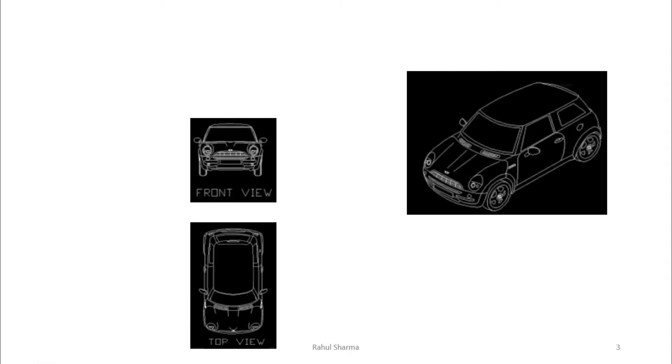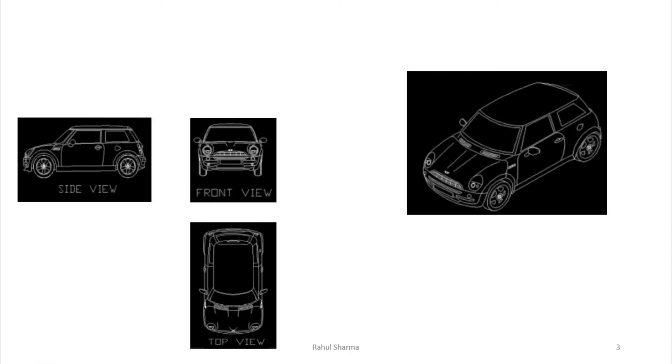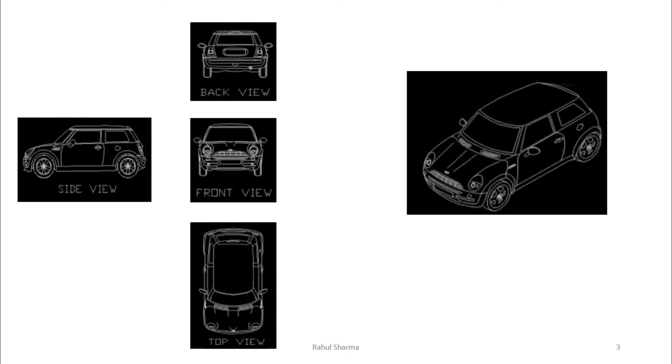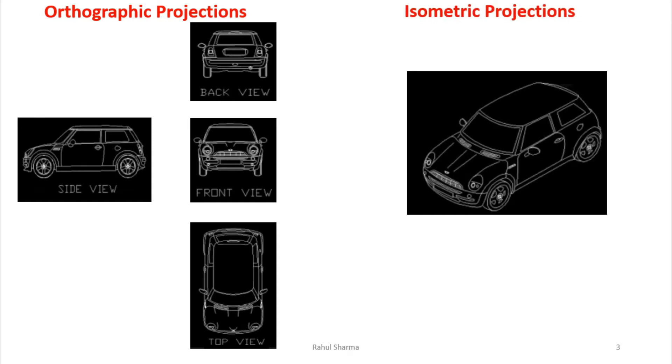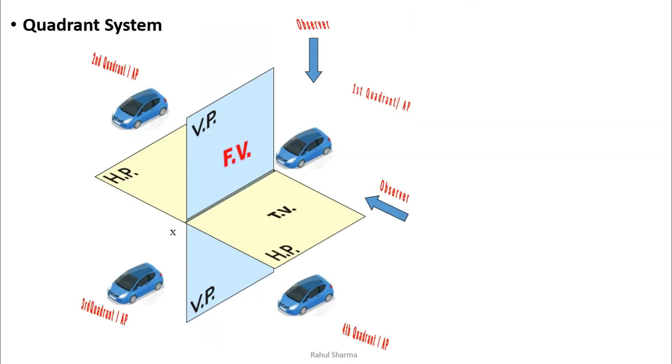For example, when we design a car from one direction only, many parts are not visible — like the rear part, back part, or side parts. So we draw the front view, top view, side view, rear view, and similarly six views of an object to give complete detail of the shape. This is orthographic projection, as opposed to isometric projection.